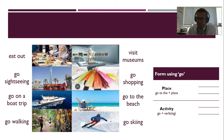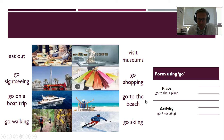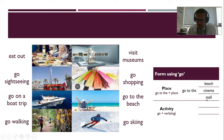And then we had form using the verb go. When it's a place, we say 'go to the'. When it's an activity, we say 'go' plus verb-ing, so like this: go shopping. Here are some examples — go to the beach, go to the cinema, go to the mall. And for the activity: go shopping, go sightseeing, go skiing.